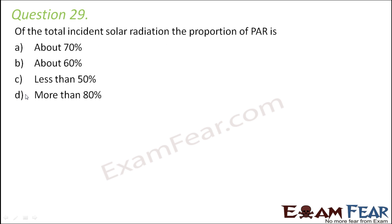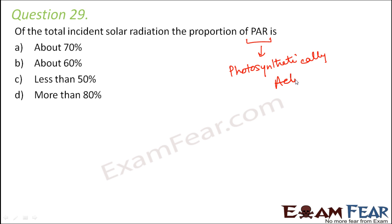Question number 29. Of the total incident solar radiation, what proportion is PAR? PAR is photosynthetically active radiation. About 50 percent of the solar radiation is photosynthetically active, and 2 to 10 percent of the photosynthetically active radiation is captured by the photosynthetic plants. So the correct option would be C.